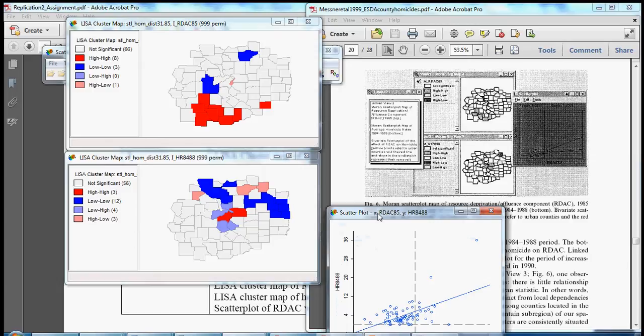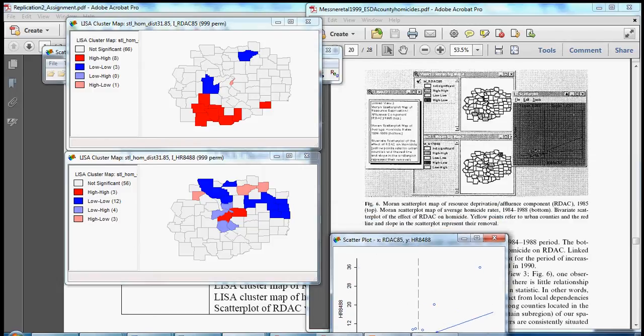Let's drop this down below for a second. So in figure six you see here that there's a high-high segment of resource deprivation or affluence in the southwest of the St. Louis metropolitan area. We see that same high-high cluster identified in red in our own map here on the left in the top. In the bottom map we see our familiar LISA cluster map for homicide rates 84-88 with the cluster right in the center.